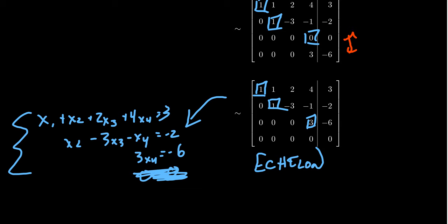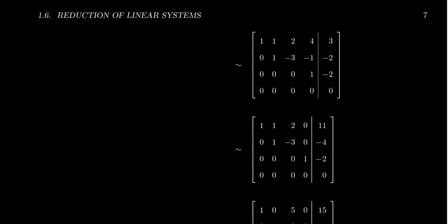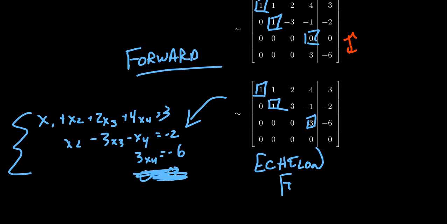We want Gauss-Jordan elimination, which means we've finished the forward phase. We've identified all pivot positions. Since the matrix is in echelon form, we know the system is consistent — no contradictions have emerged. We also know the system has multiple solutions because column 3 is a non-pivot column, making x3 a free variable. Variables x1, x2, and x4 are dependent variables.